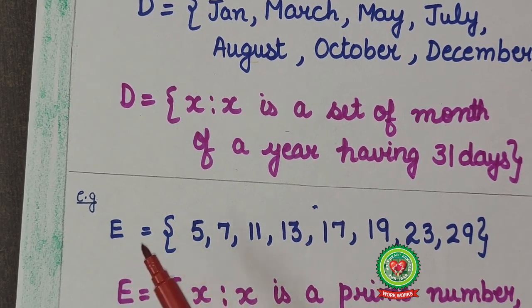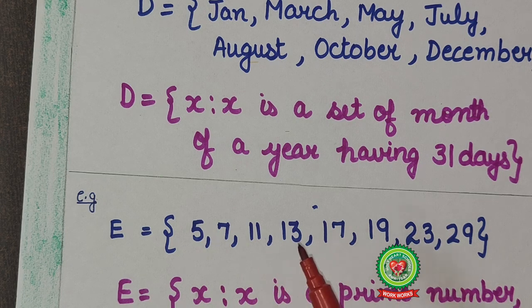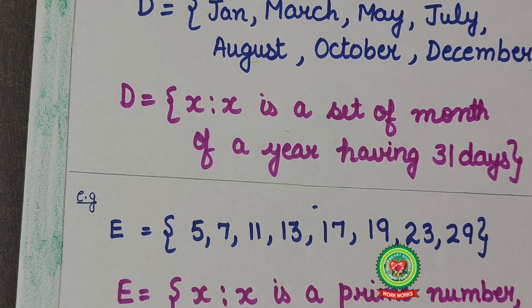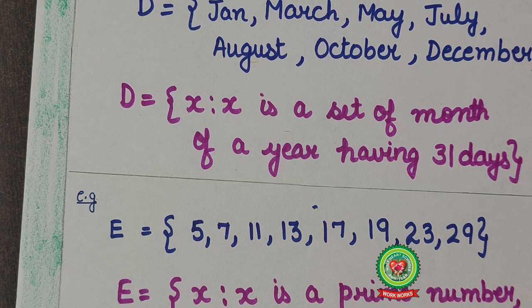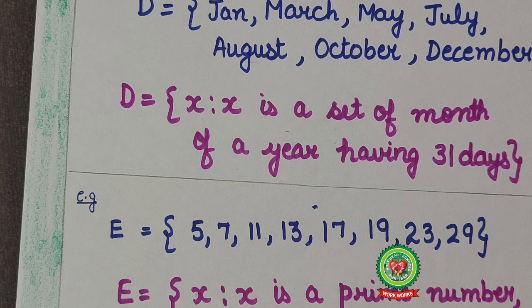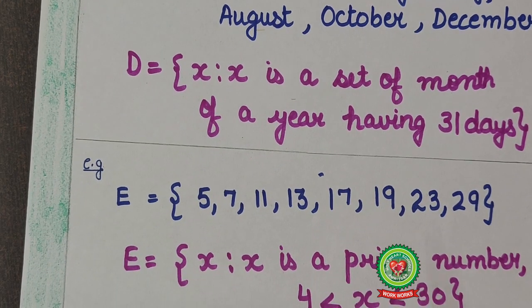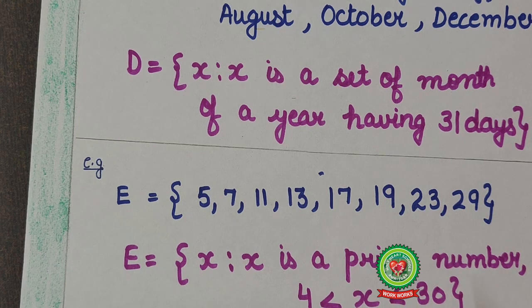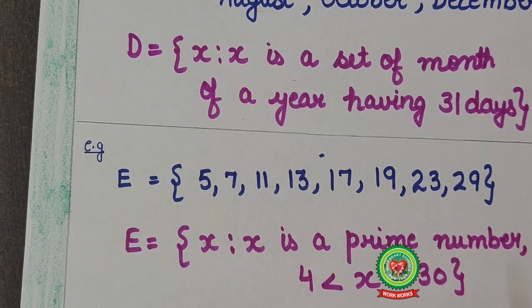Now next example is E equals 5, 7, 11, 13, 17, 19, 23, 29. Now as you can see these all numbers are prime numbers. But prime numbers starts from two. But here in set we are starting from five. That means these are prime numbers but greater than four and less than 30. So how to write in set builder form: capital E equals x such that x is a prime number where x is greater than four but less than 30, curly bracket close.